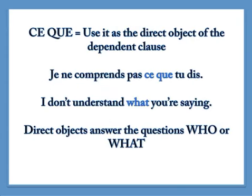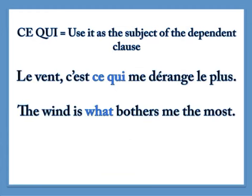Here's another example using ce que — remember, ce que is the direct object of the dependent clause. Je ne comprends pas ce que tu dis — 'I don't understand what you're saying.' Direct objects answer 'who' or 'what,' and here it answers 'what.' For ce qui, just a reminder: we use it as the subject of the dependent clause. Le vent, c'est ce qui me dérange le plus — 'The wind is what bothers me the most.'